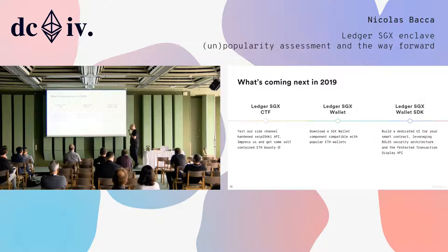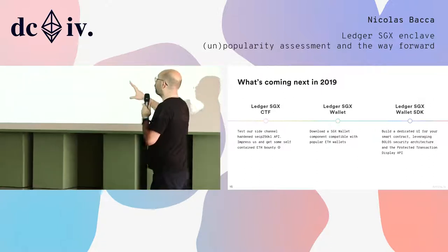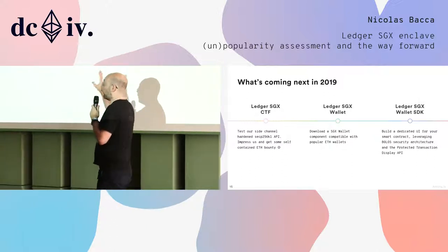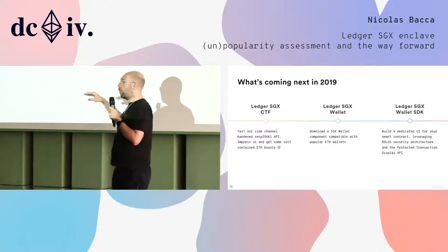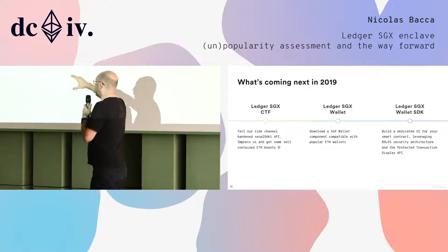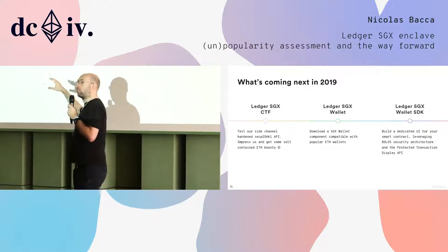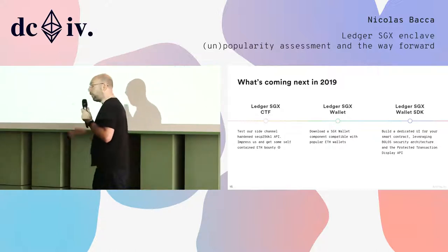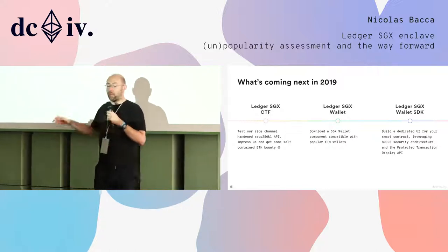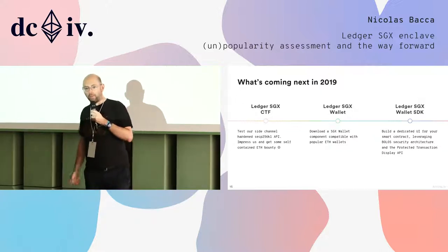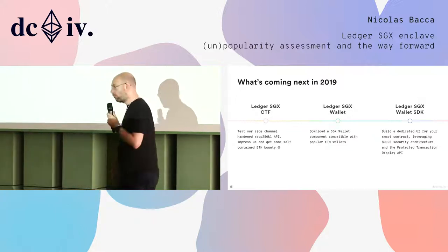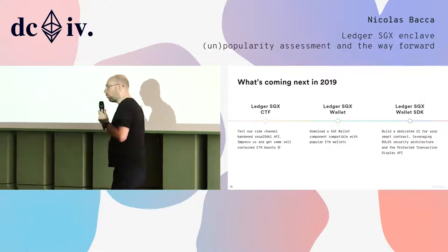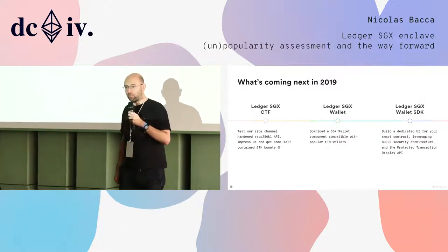To finish — a summary of what is coming next in 2019 for our enclave. First, we want to start with a CTF. After our review, we will publish what we did with our hardened API. It's a standard CTF — if you win, you get Ether, because we'll put some Ether in our enclave. We'll gradually increase the amount and see if people manage to extract something.